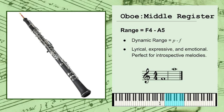The middle register spans from approximately F4 to A5 — the F above middle C to the A at the top of the treble clef — and it has a general dynamic range of piano to forte, or soft to loud.